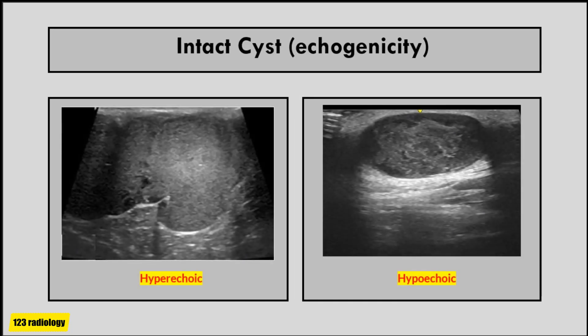The echogenicity of the lesion can be either echogenic or hypoechoic to the surrounding tissue. On the right side of the screen the lesion is hyperechoic to the surrounding tissues, while the lesion on the left side of the screen is hypoechoic to the surrounding tissues.